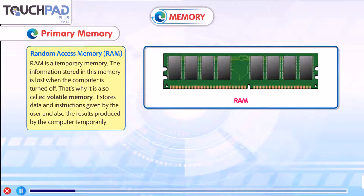Random Access Memory, RAM, is a temporary memory. The information stored in this memory is lost when the computer is turned off. That is why it is also called Volatile memory. It stores data and instructions given by the user and also the results produced by the computer, temporarily.